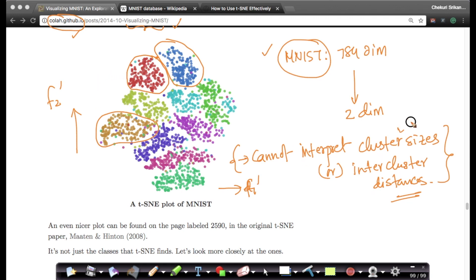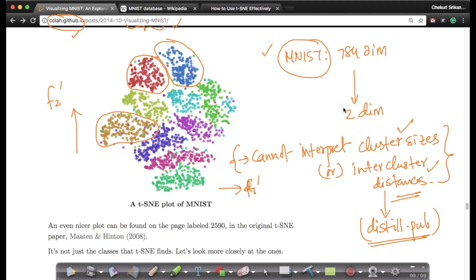So you cannot interpret cluster sizes and inter-cluster distances from the previous video where we saw how to interpret t-SNE outcomes which we saw from distill.pub webpage. But here the most important takeaway is that yes, t-SNE in the high-dimensional dataset - since I can't visualize 784 dimensions, I have two-dimensional data. And when I visualize in this two-dimensional data, first thing I notice is all of my zeros are grouped together, all of my sixes are grouped together. Here if you see your fives, you have a bunch of fives here and you also have a bunch of fives here.